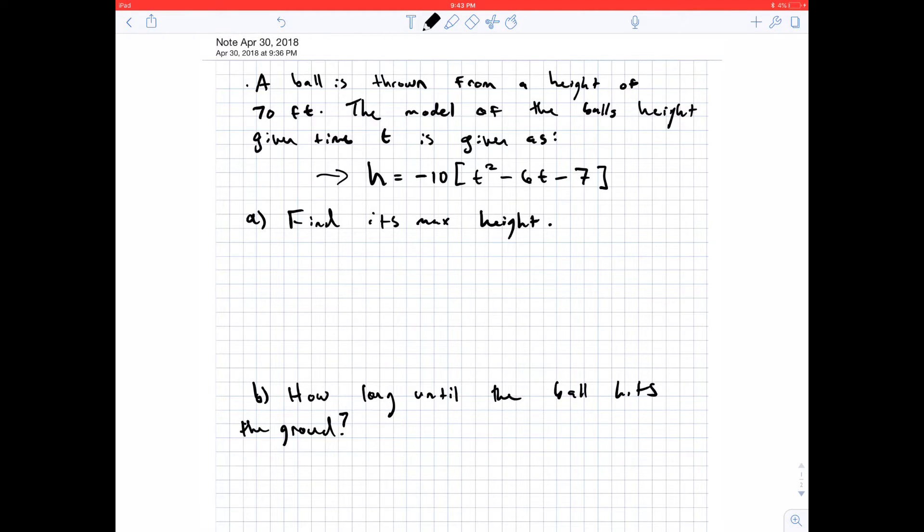So basically, this is telling us that for some time t, whenever we plug in t, it's going to give us a height h. So our pairs, when we graph, are going to look like our input time and our output h.